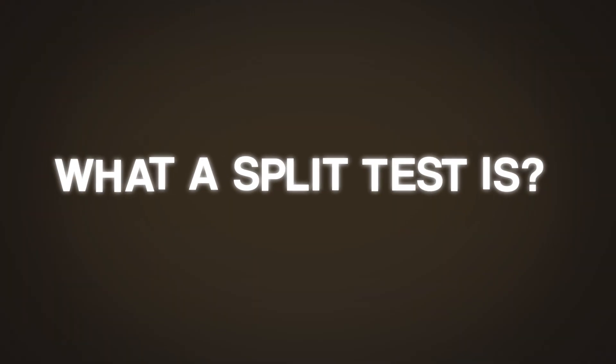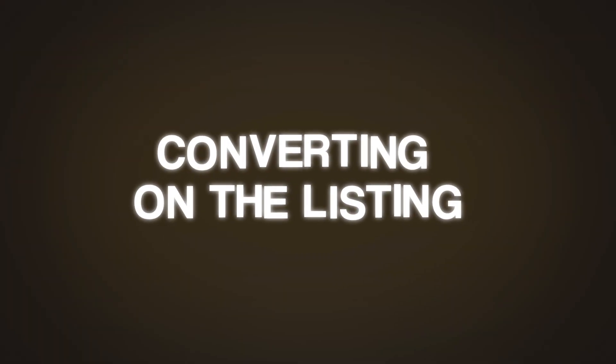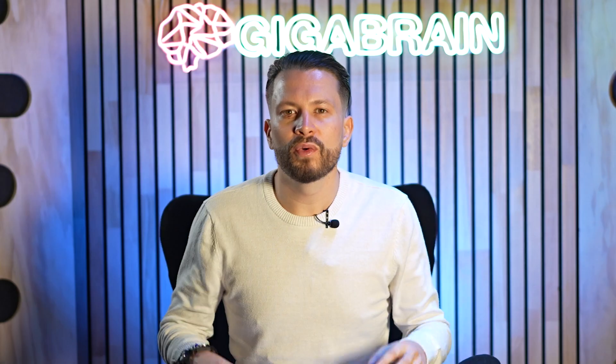I should probably cover what a split test is. Split testing in a nutshell is trying two different images and picking the image that works best, based on a series of data over time — how many people are going through and converting on the listing as well as purchasing it. We use this to test all of our content. Sometimes I personally think image A is going to do better than image B, but image B ends up being better. That's why we always want to make data-based decisions, and how do we get data? By doing split tests.